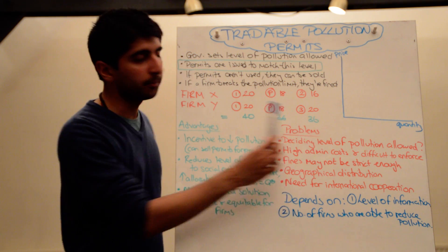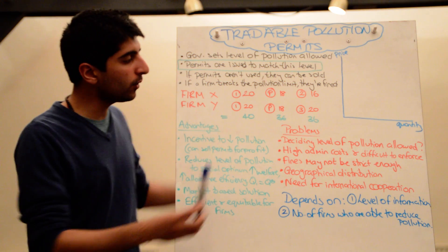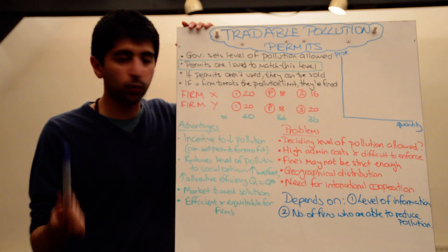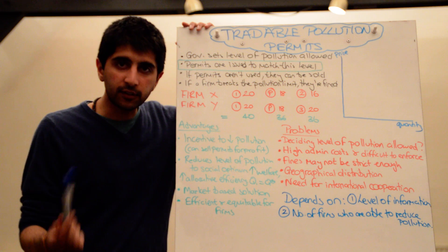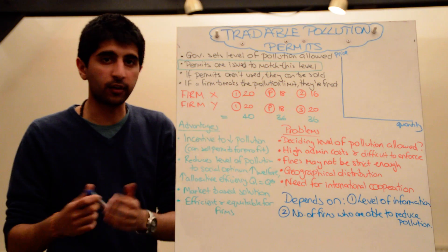They're still, together, combined to reach 36 units. So even though firm Y continues to pollute at 20, there is an efficient solution met because of the fact that these permits can be bought and sold.